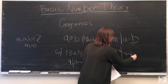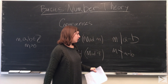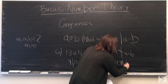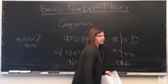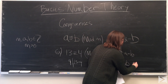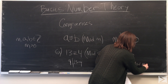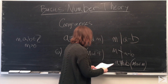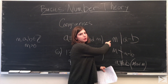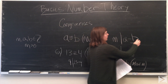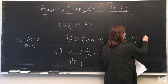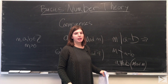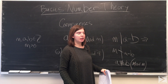If m does not divide a minus b, then we say that a is incongruent to b modulo m. Since m divides a minus b, that means there's an integer k such that mk is equal to a minus b.